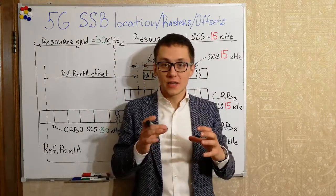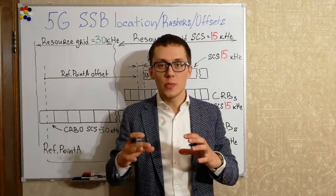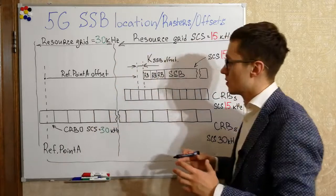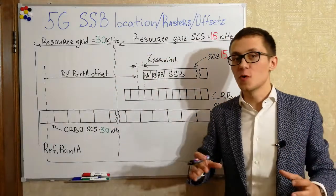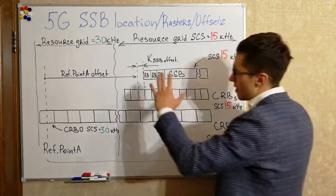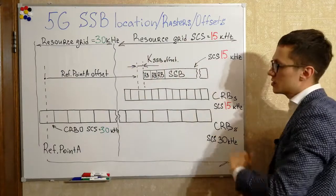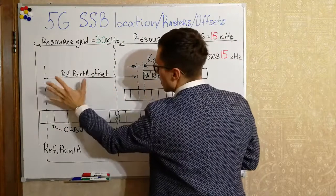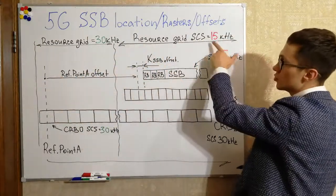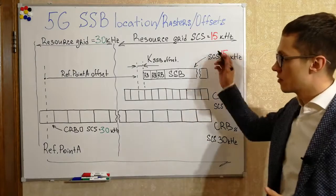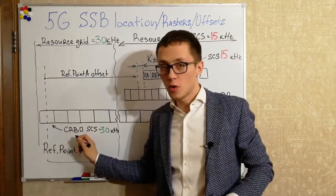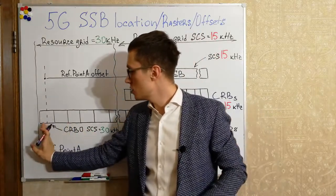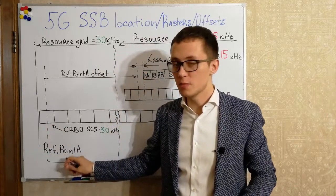After defining the exact location of the SSB block, the user equipment needs to find reference point A. This is the whole cell bandwidth. This part is the resource grid with 30 kHz subcarrier spacing, and this part is the resource grid with 15 kHz subcarrier spacing. The center of common resource block 0 is used to identify the reference point A position.